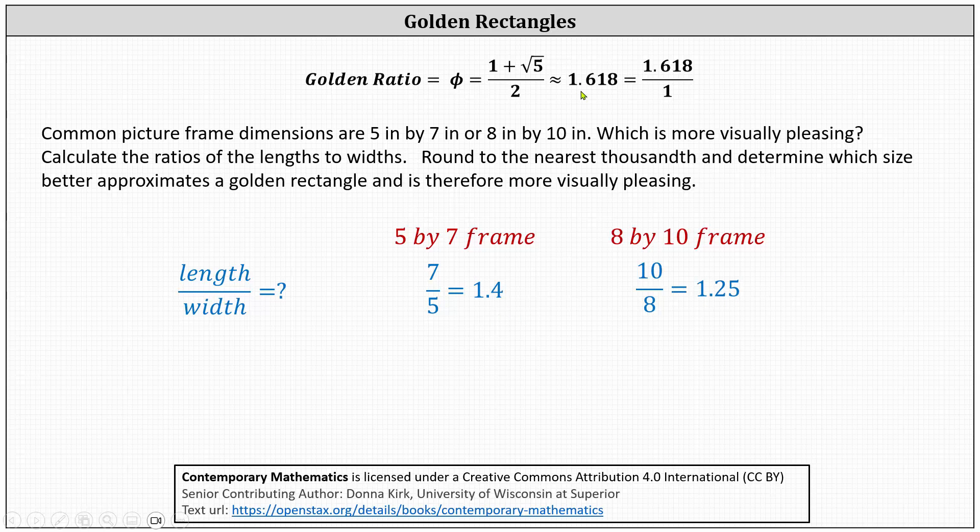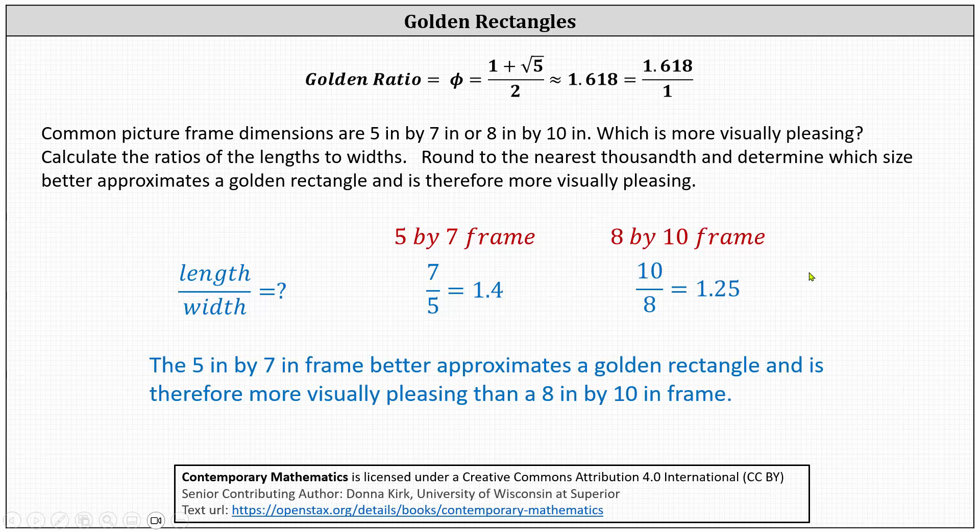And because 1.4 is closer to the golden ratio of 1.618 than 1.25, the 5 by 7 frame is a better approximation of a golden rectangle and is therefore more visually pleasing than an 8 inch by 10 inch frame. I hope you found this interesting. Thank you for watching.